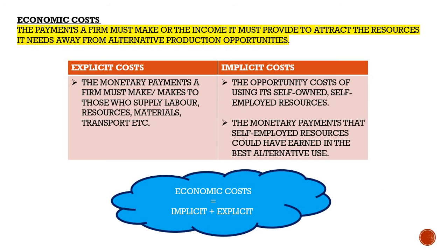We're going to start off with economic costs. Economic costs are the payments that a firm must make, or the income it must provide, to attract the resources it needs away from alternative production opportunities. There are two types of economic costs: explicit costs and implicit costs. Explicit costs are the monetary payments a firm makes to those who supply labor, resources, materials, transport, etc.